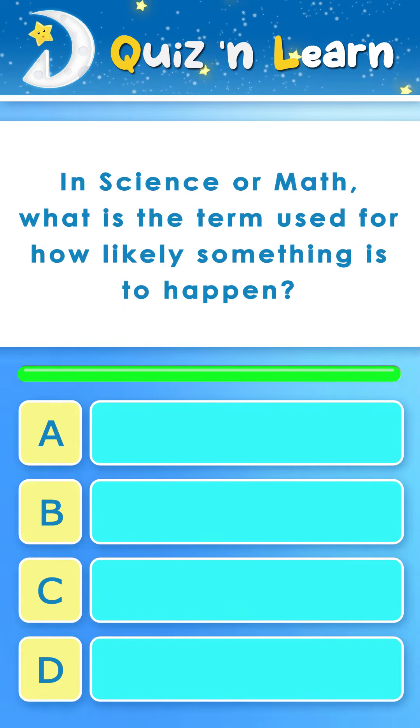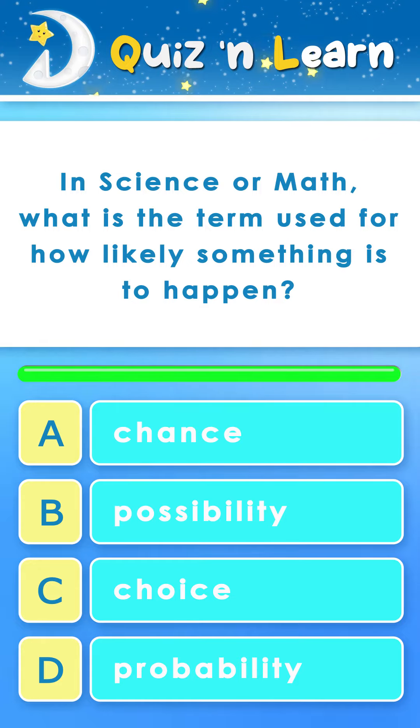In science or math, what is the term used for how likely something is to happen? A. Chance B. Possibility C. Choice D. Probability